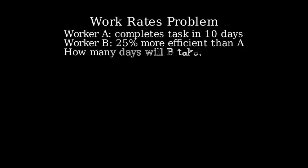Let's solve the work rates problem involving two workers with different efficiencies. Here's our problem. Worker A can complete a task in 10 days. Worker B is 25% more efficient than Worker A. We need to find out how many days it will take Worker B to complete the same task alone.